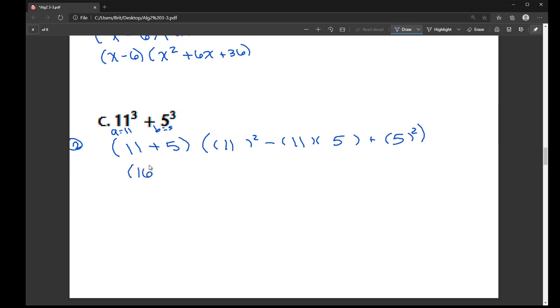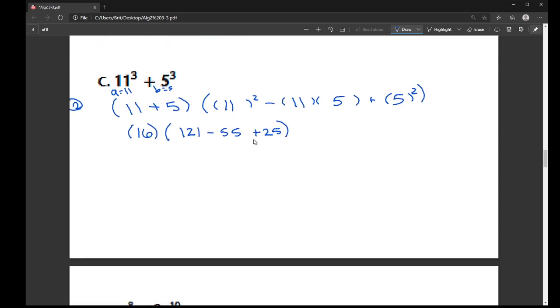So here, 11 plus 5 is 16. Here, 11 squared is 121. 11 times 5 is 55. And 5 squared is 25. So now, negative 55 plus 25, that's negative 30. So 121 minus 30 is 91. So I need to find 16 times 91. I'm just going to do what I should have done, plug it into a calculator. And I get 1,456.